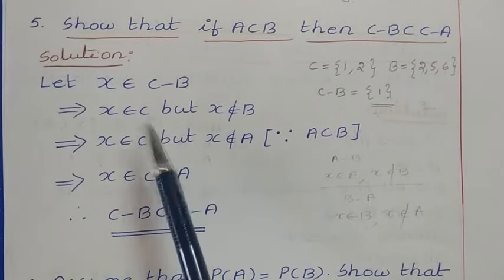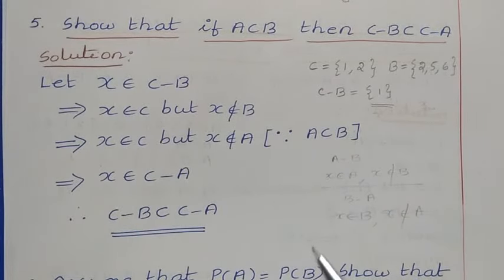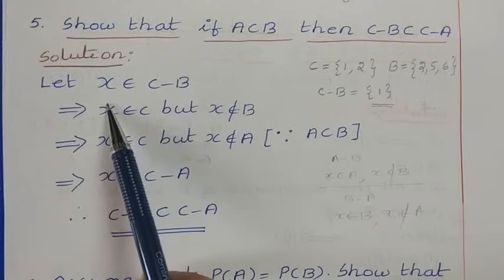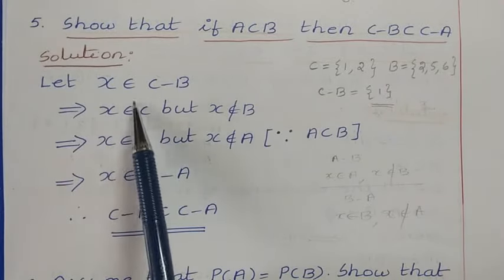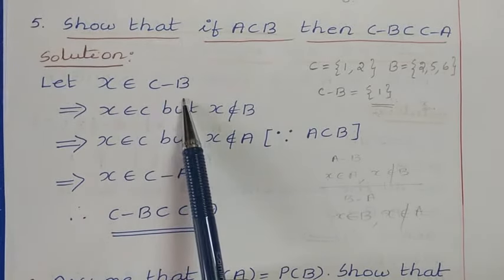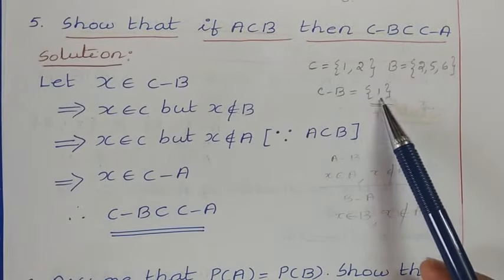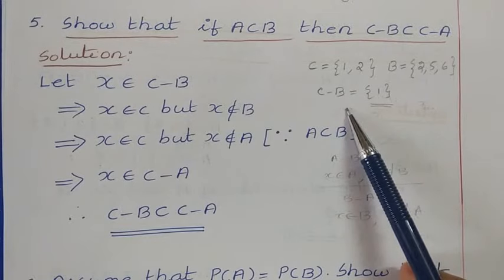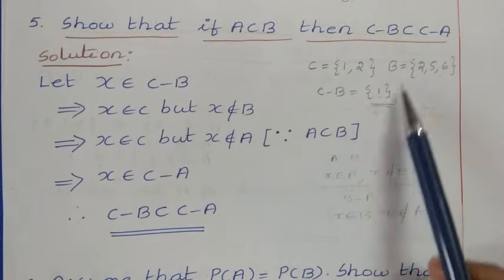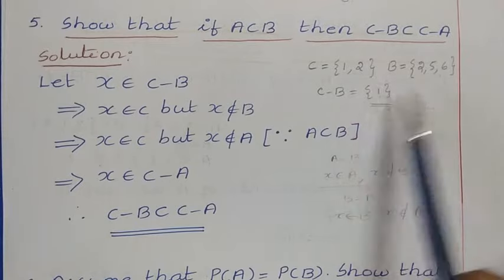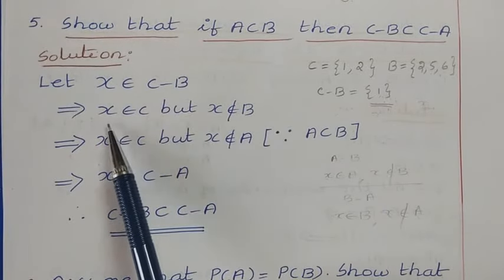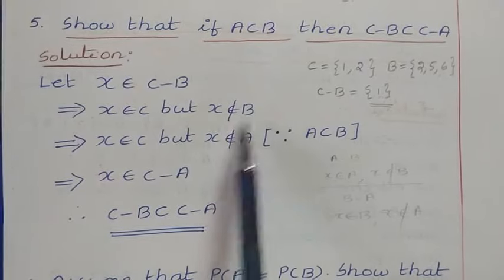Now let us solve this question. I will consider one element X which is in C minus B. So let us assume that X belongs to C minus B. If X belongs to C minus B, then — as in the example where 1 belongs to C minus B — this means X belongs to C but X does not belong to B.